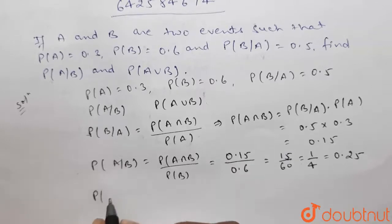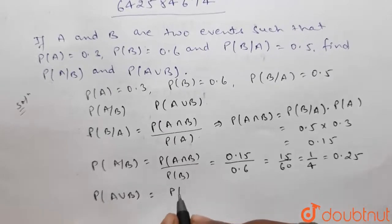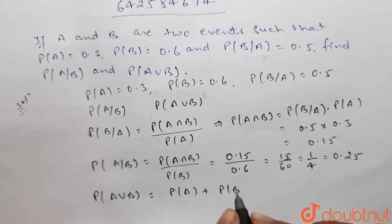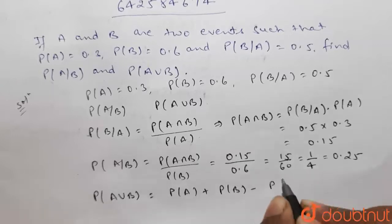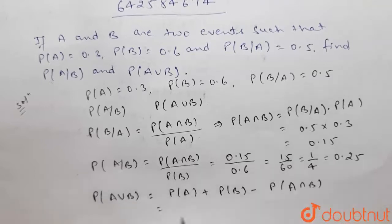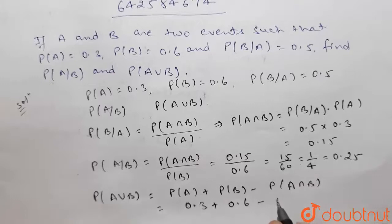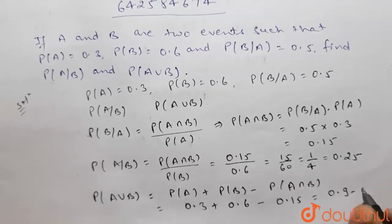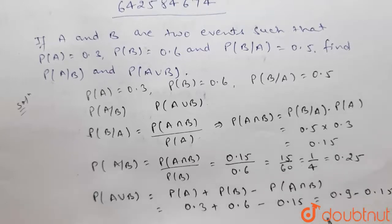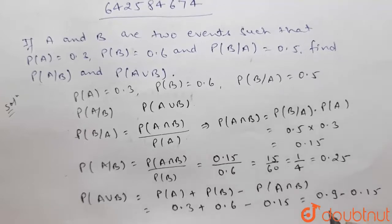Now we have to find probability of A union B. Probability of A union B is equal to probability of A plus probability of B minus probability of A intersection B. Probability of A is 0.3 plus probability of B is 0.6 minus probability of A intersection B is 0.15, so this will be equal to 0.9 minus 0.15, which is equal to 0.75.